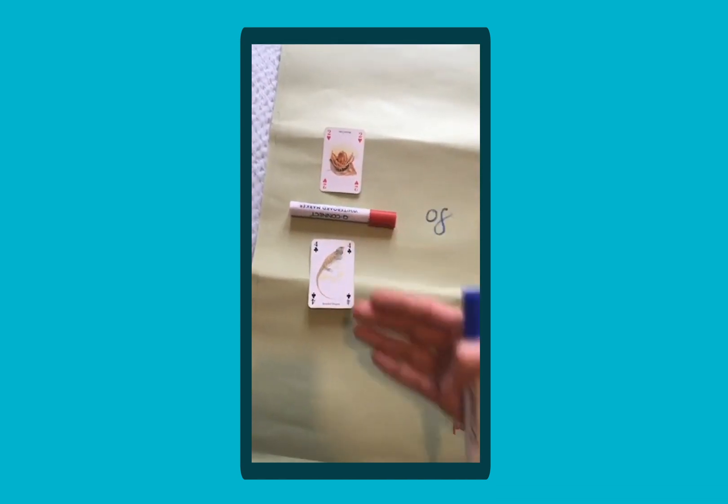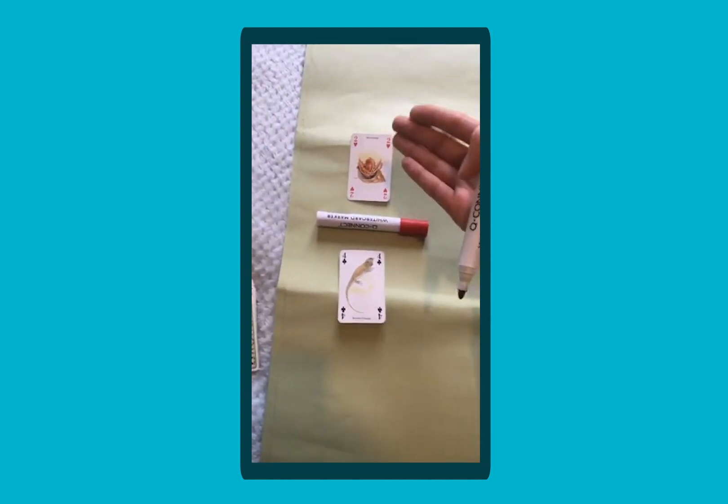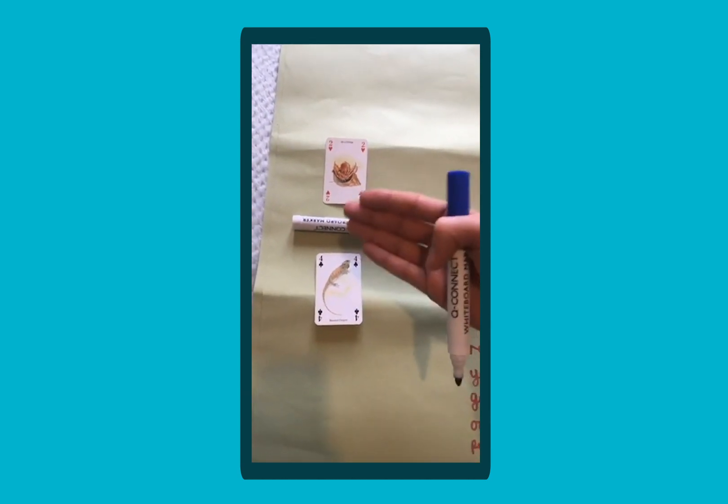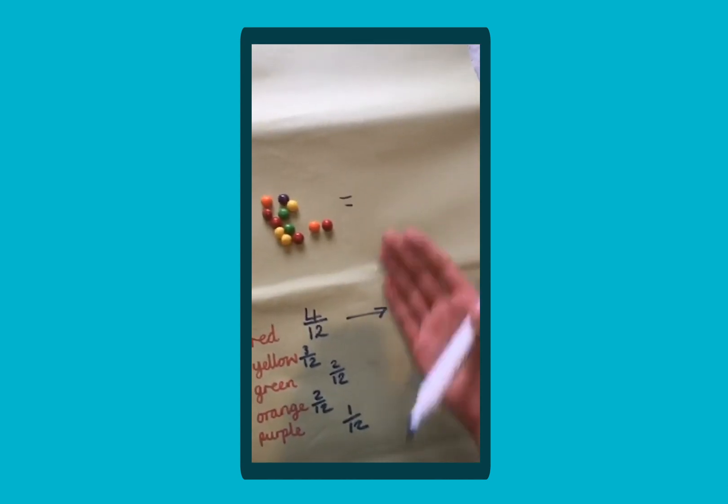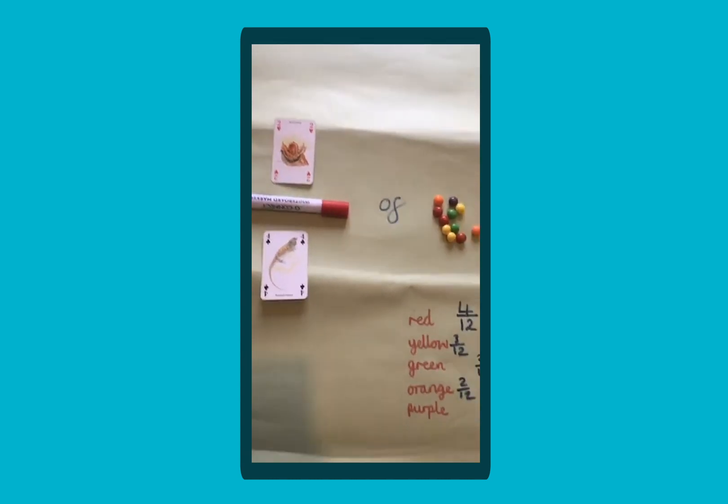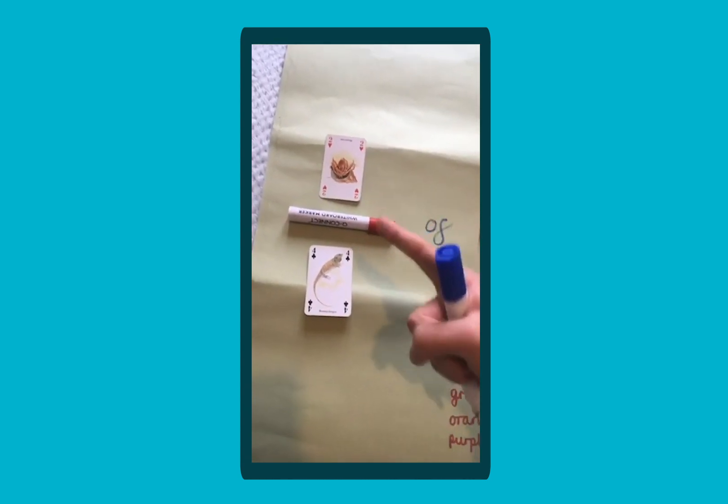And then again you can simplify that, because equivalent fractions coming into lower key stage two, they should know two quarters is the same or equivalent to a half. So it's half of 12, so they should know the answer is six. Again, you can change the denominator, change the numerator, it doesn't matter which one.